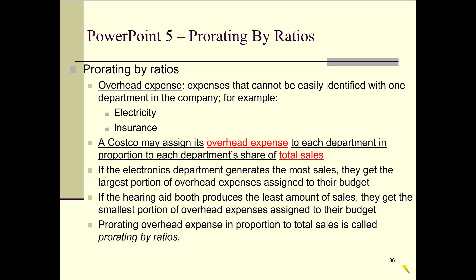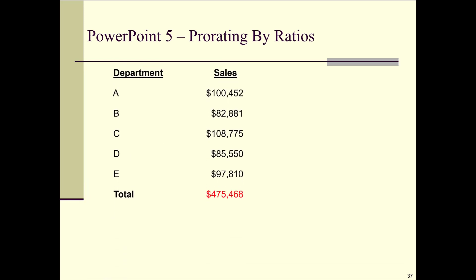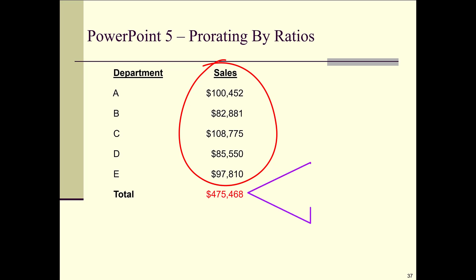Let's do an example. Let's say your Costco has five departments: A, B, C, D, and E, with sales for each department. The department that generates the most sales is department C, and the department that generates the least sales is department B. Our total sales are $475,468.